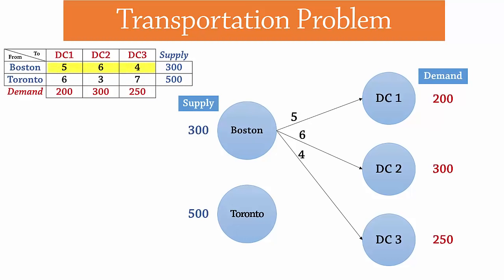Here are the shipping costs from Boston to the distribution centers and here are the costs from Toronto. The arrows from the origins to destinations are called arcs.